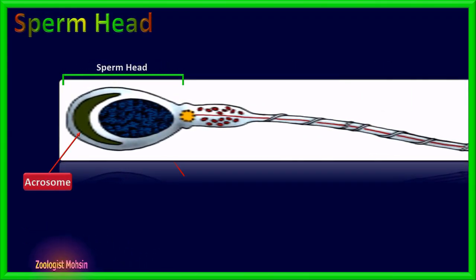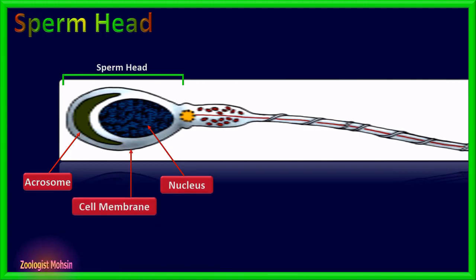Sperm head carries two important structures. On the anterior side lies the acrosomal vesicle, and behind it a streamlined pronucleus is present. In almost all species, cytoplasm is eliminated during maturation and DNA inside the nucleus becomes highly condensed.